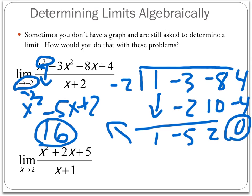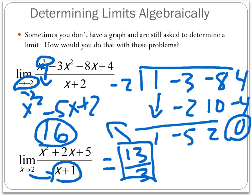The next one looks like another fraction. You might think you need synthetic division or factoring — but watch: when I replace x with 2, remember to always substitute first. Notice there's no dividing-by-0 problem here, so this doesn't require factoring at all. I replace x with 2 and get 4 plus 4 plus 5 equals 13 on top, and 2 plus 1 equals 3 on the bottom. So the limit is 13 over 3.